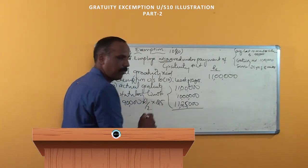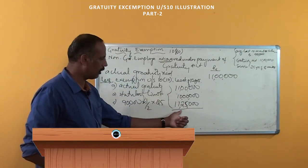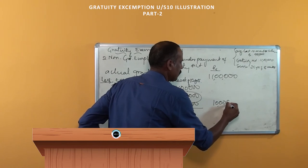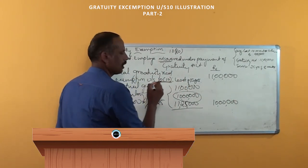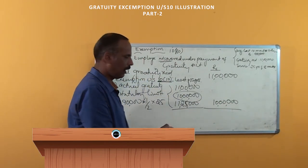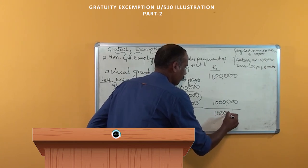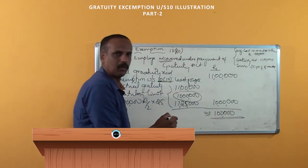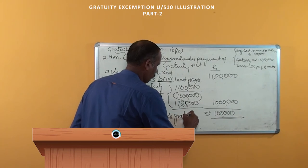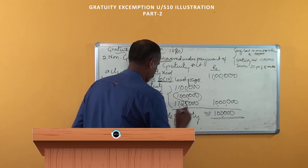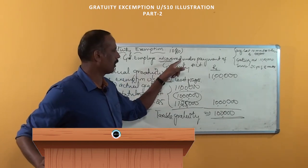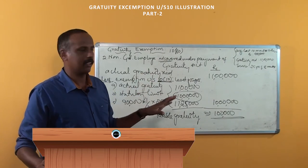What is the least of these three? 11 lakh, 10 lakh, or 11,25,000 — it is 10 lakh. So we are going to consider rupees 10 lakh as the exempted gratuity as per section 10, subsection 10. The difference between 11 lakh and 10 lakh is rupees 1 lakh. This 1 lakh rupees is considered as taxable gratuity, and this taxable gratuity has to be included in the salary of that particular retired employee.